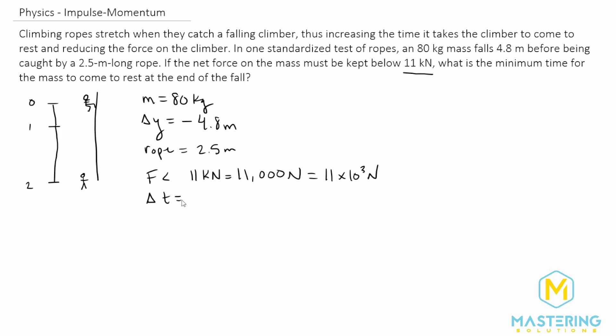And of course they want to know what is the change in time, so a delta t question mark. If we write the formula for impulse, we have J is equal to the average force times the change in time, which is also equal to the change in momentum.